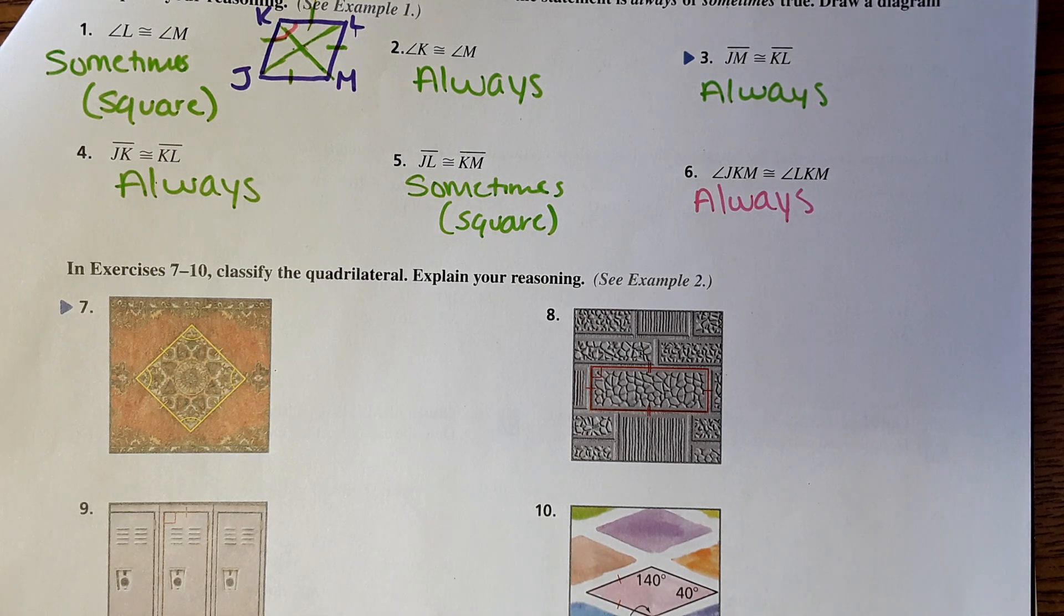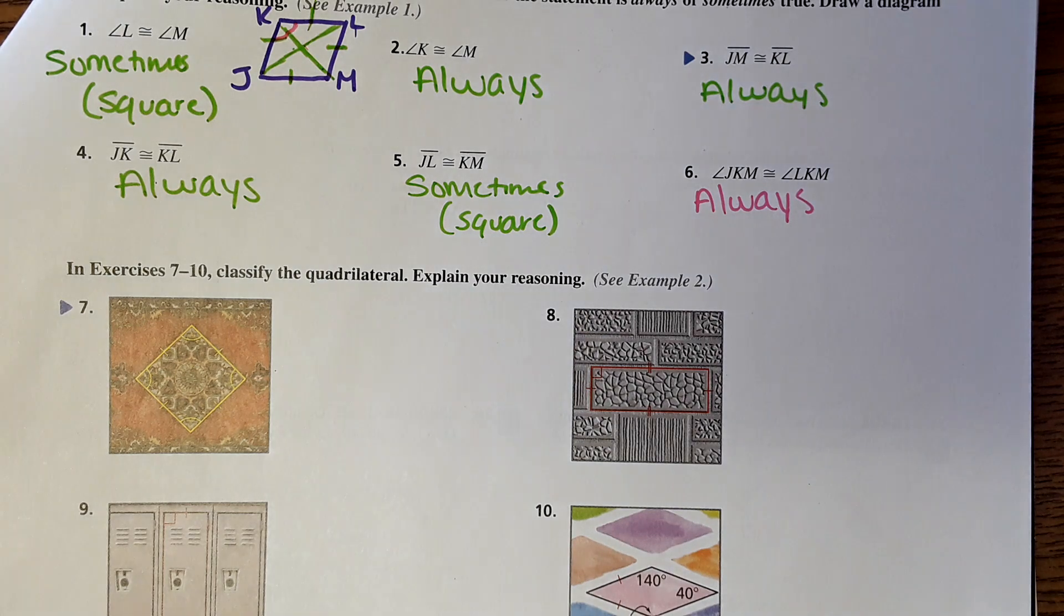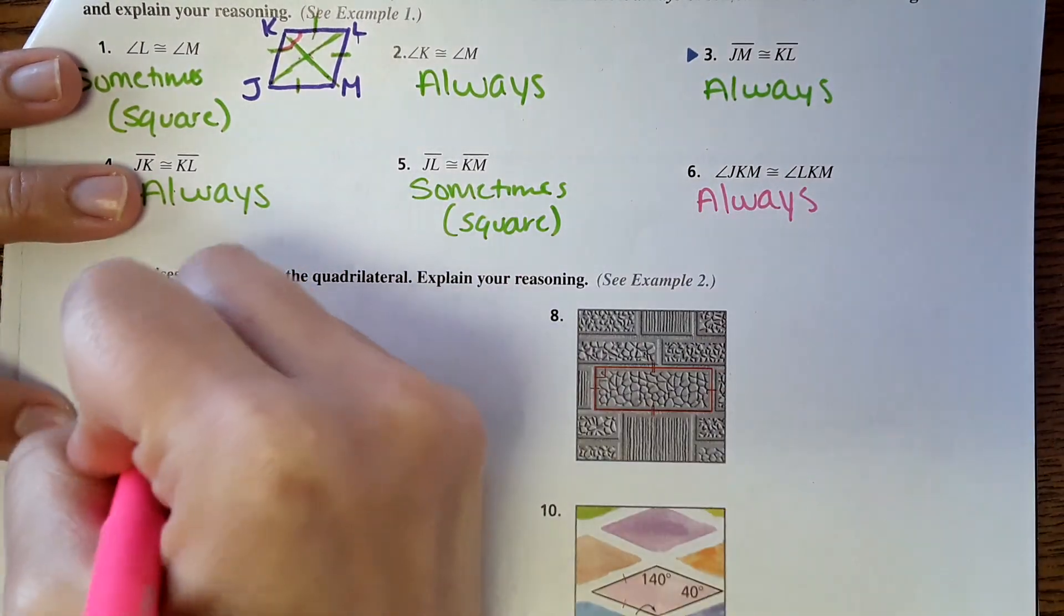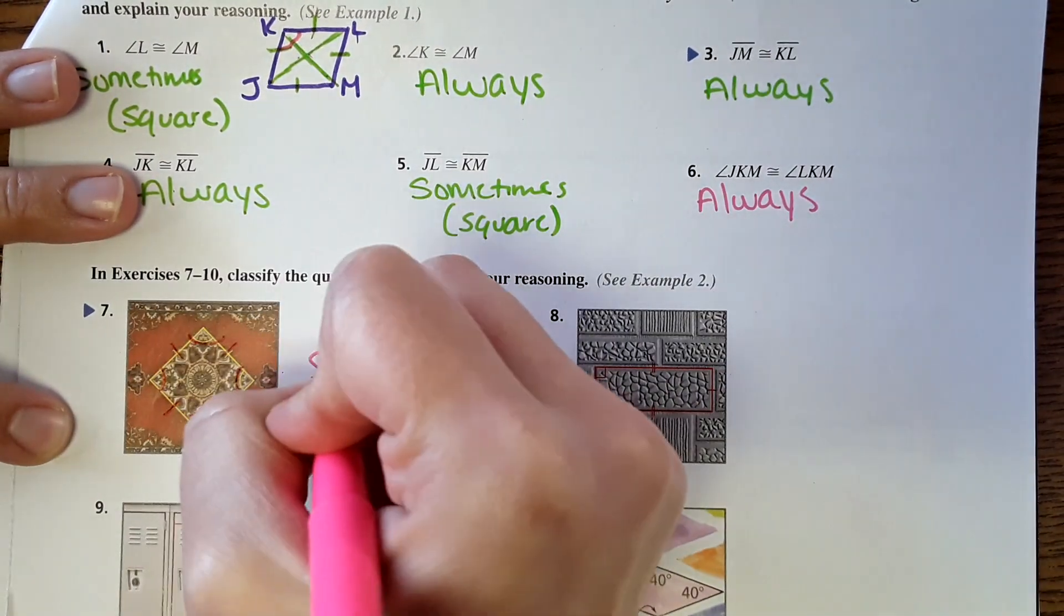Moving on. Now we just have to classify the quadrilaterals. You guys had some practice with this on Khan Academy. So just classifying the quadrilateral, this one shows that all the sides are equal and the angles are all the same. So that would have to be a square.